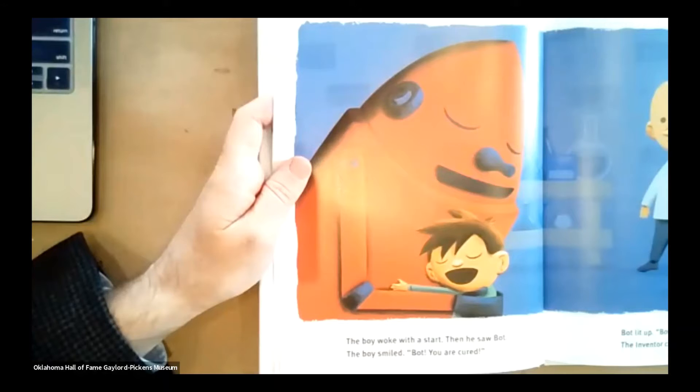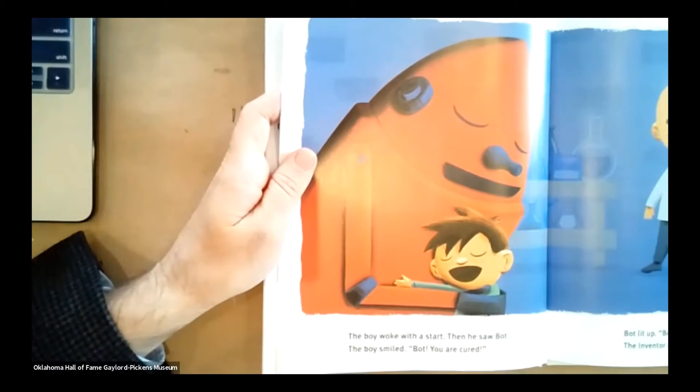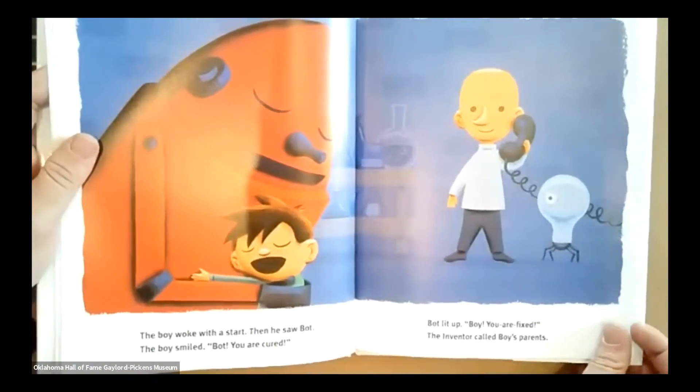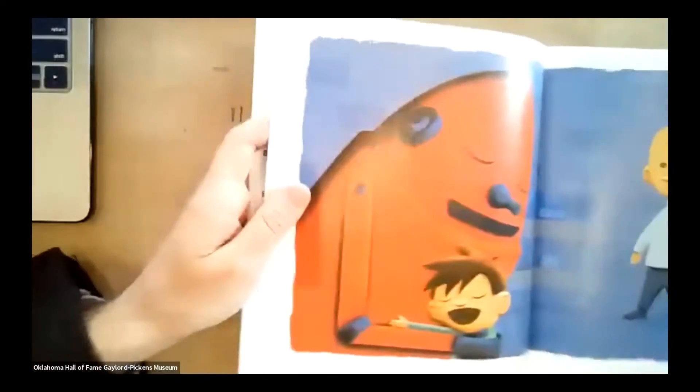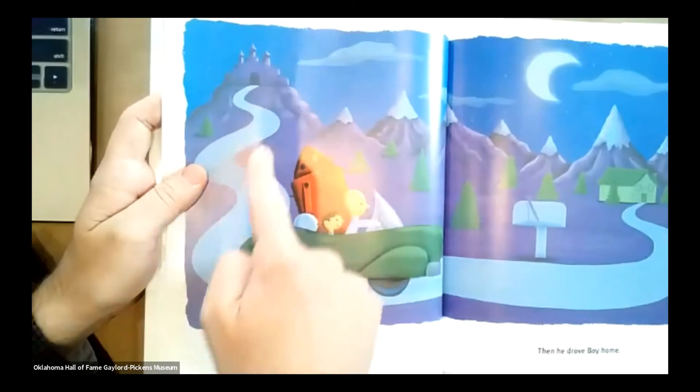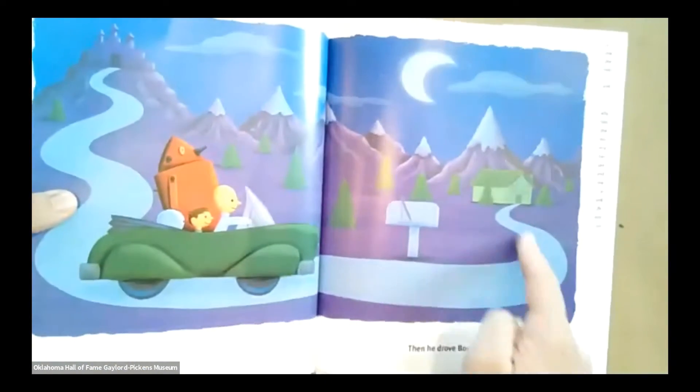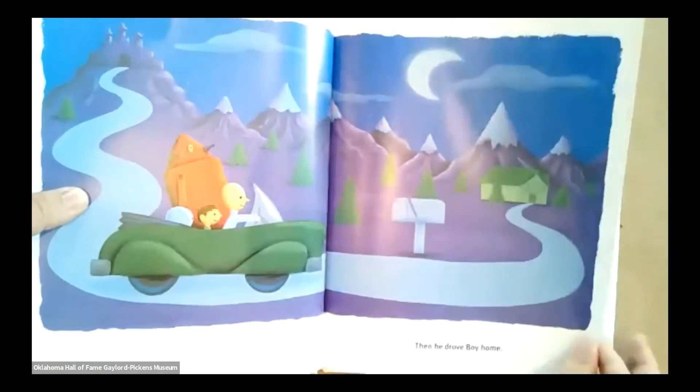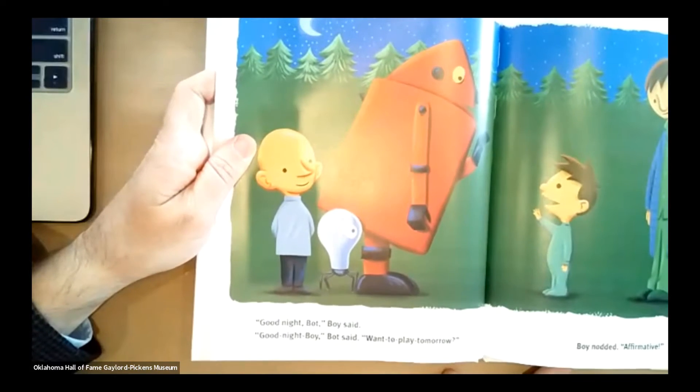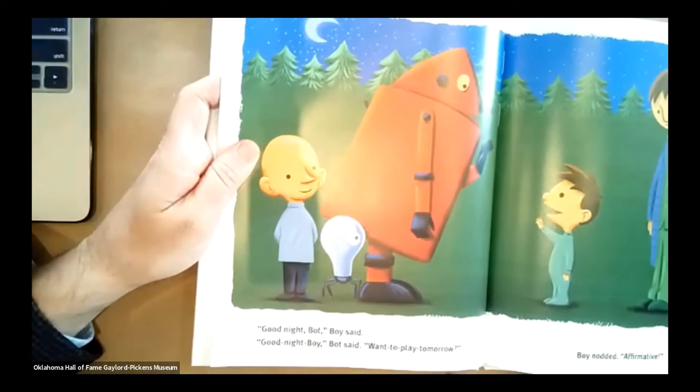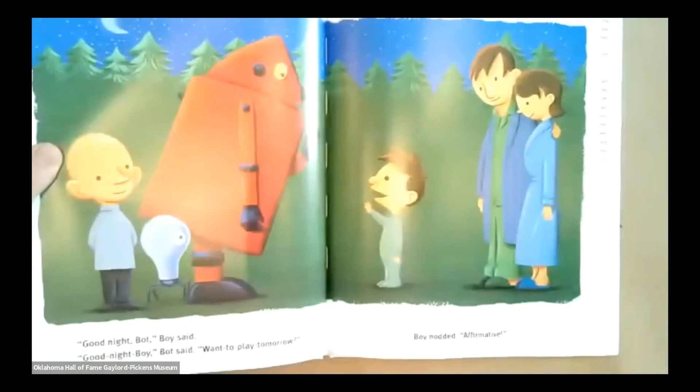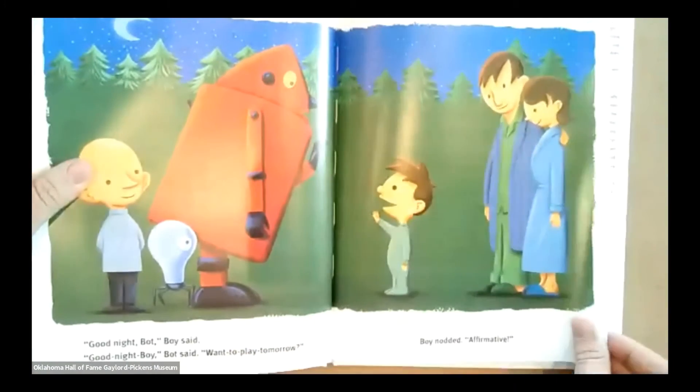The boy woke with a start. Then he saw Bot. The boy smiled. Bot, you are cured. Bot lit up. Boy, you are fixed. The inventor called boy's parents. Then he drove boy home. So they left the Bot's home. They got in the car. And they're going all the way to the boy's home. Good night, Bot, boy said. Good night, boy, Bot said. Want to play tomorrow. Boy nodded. Affirmative.